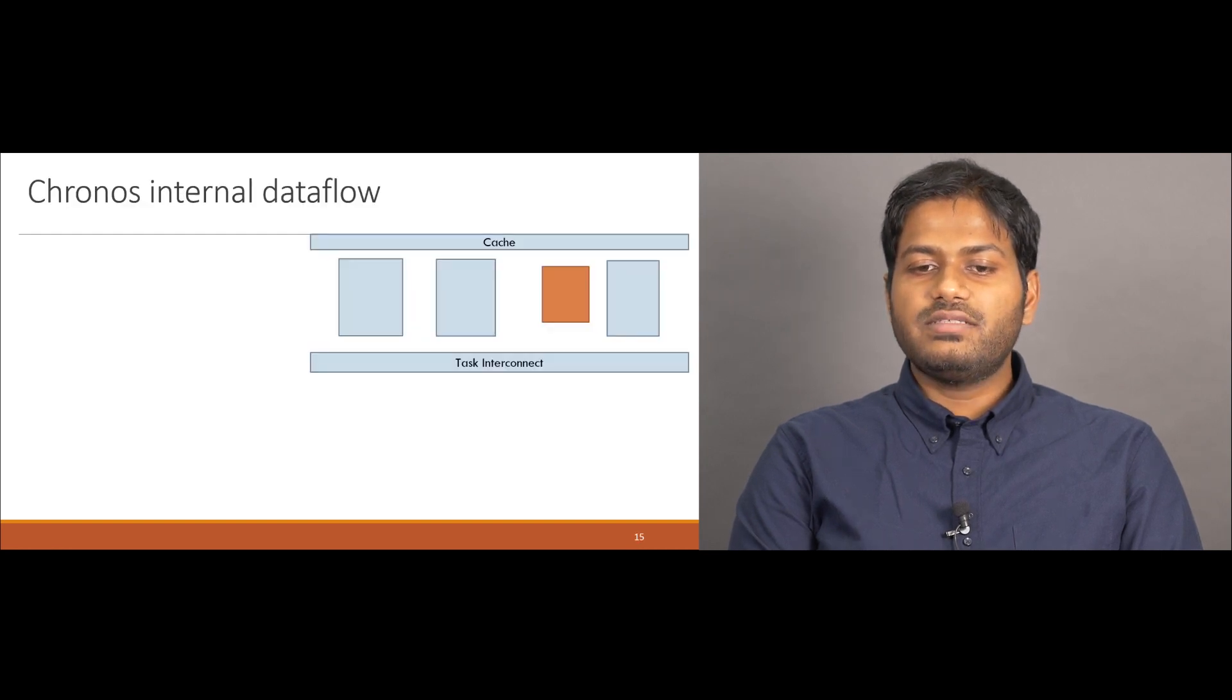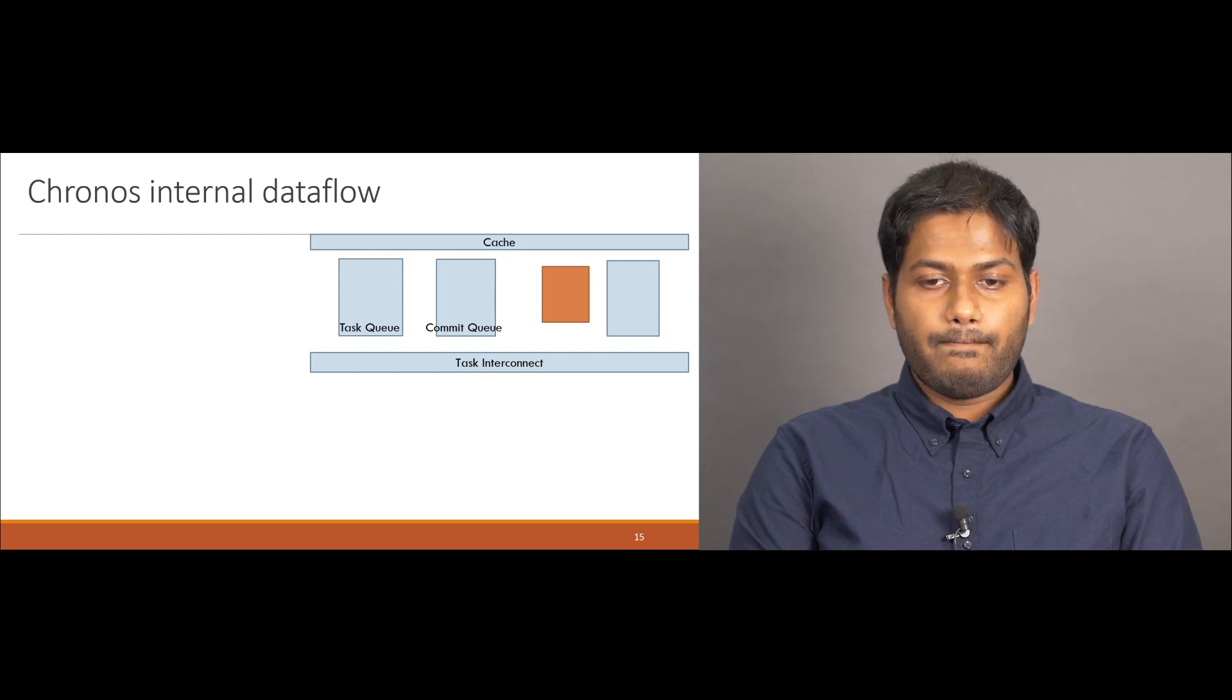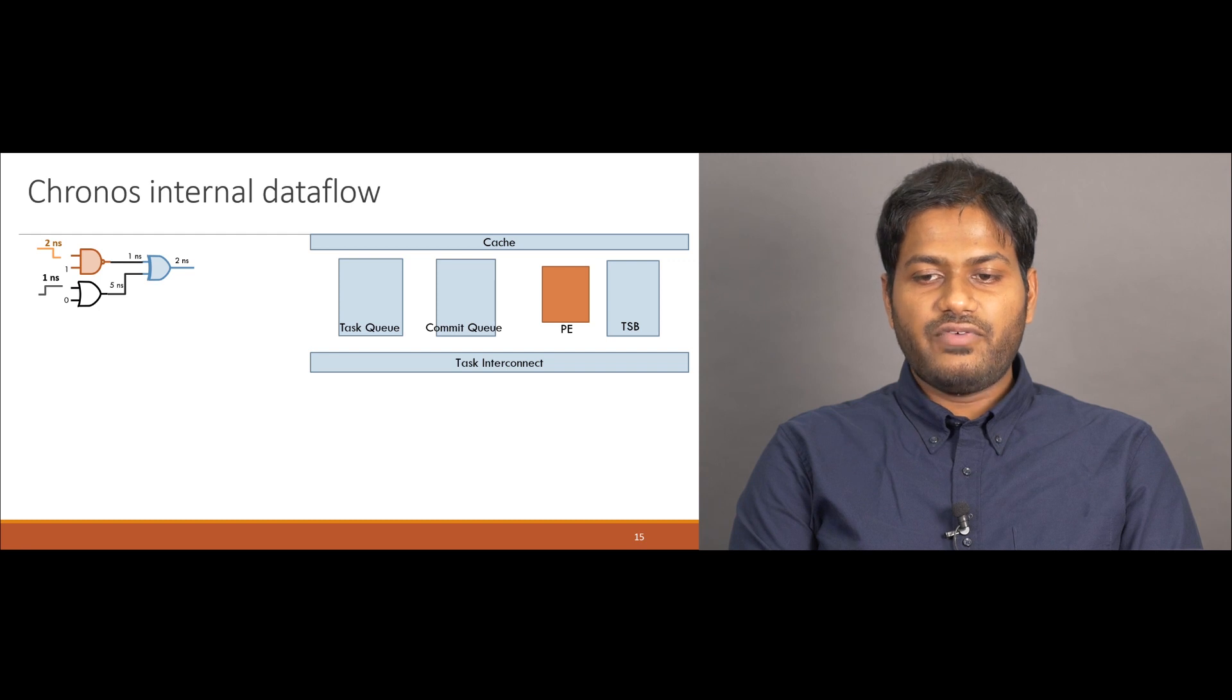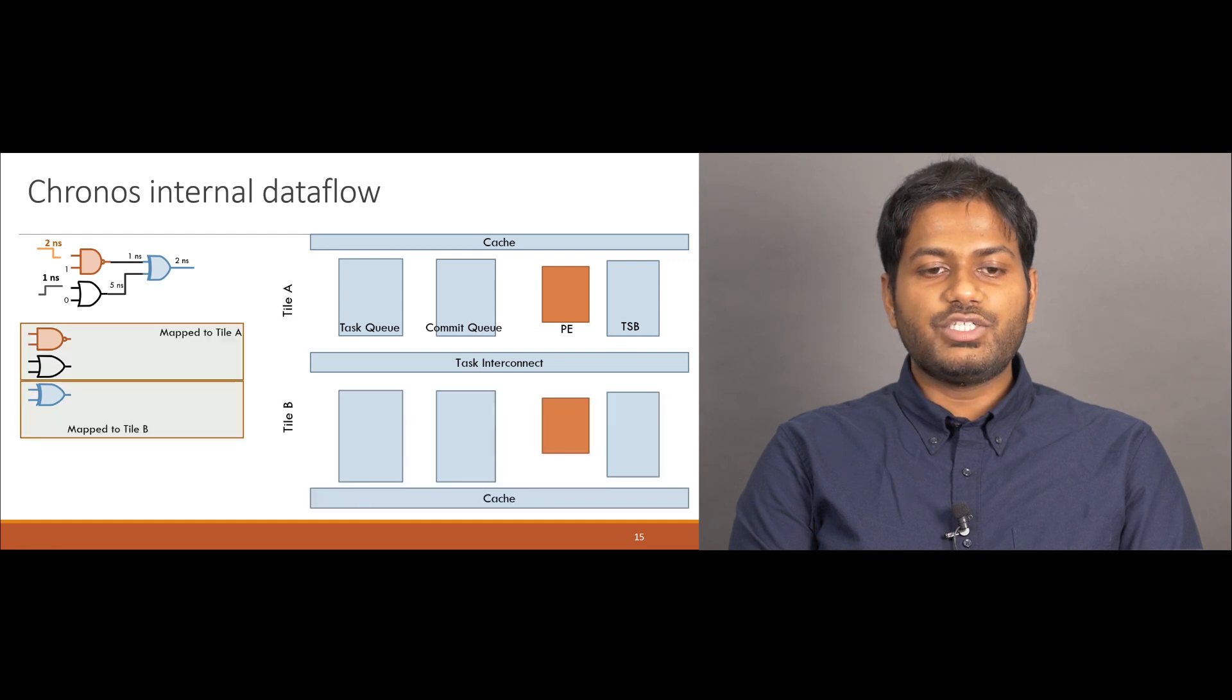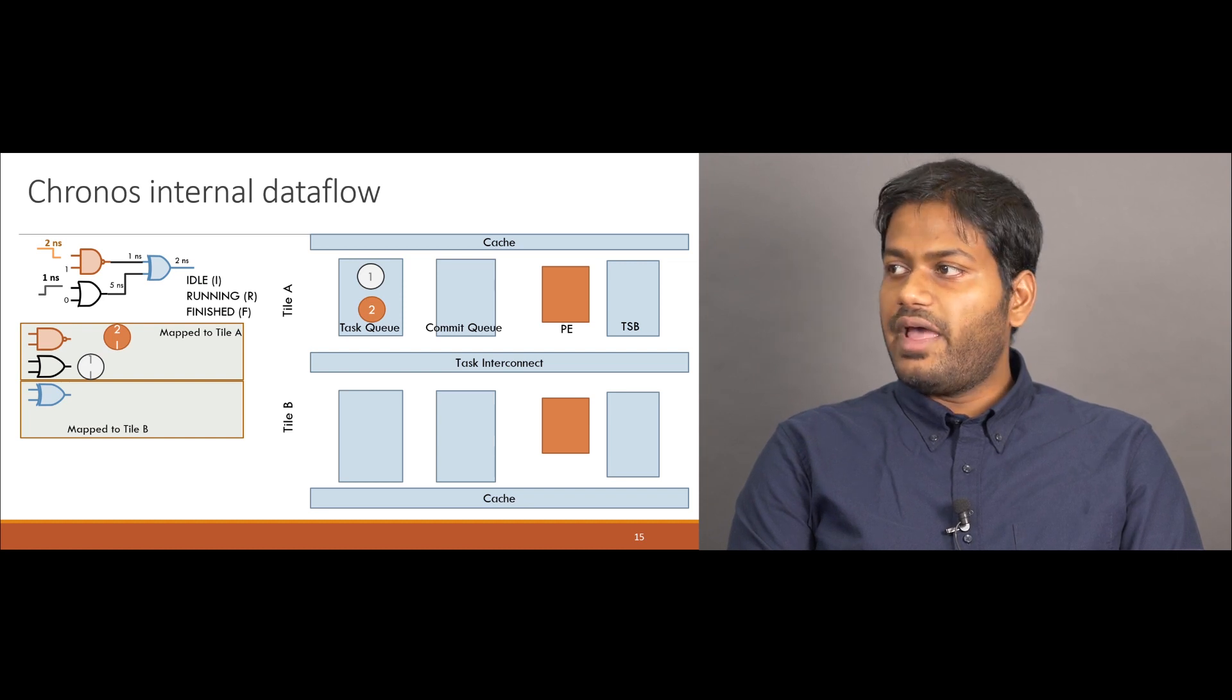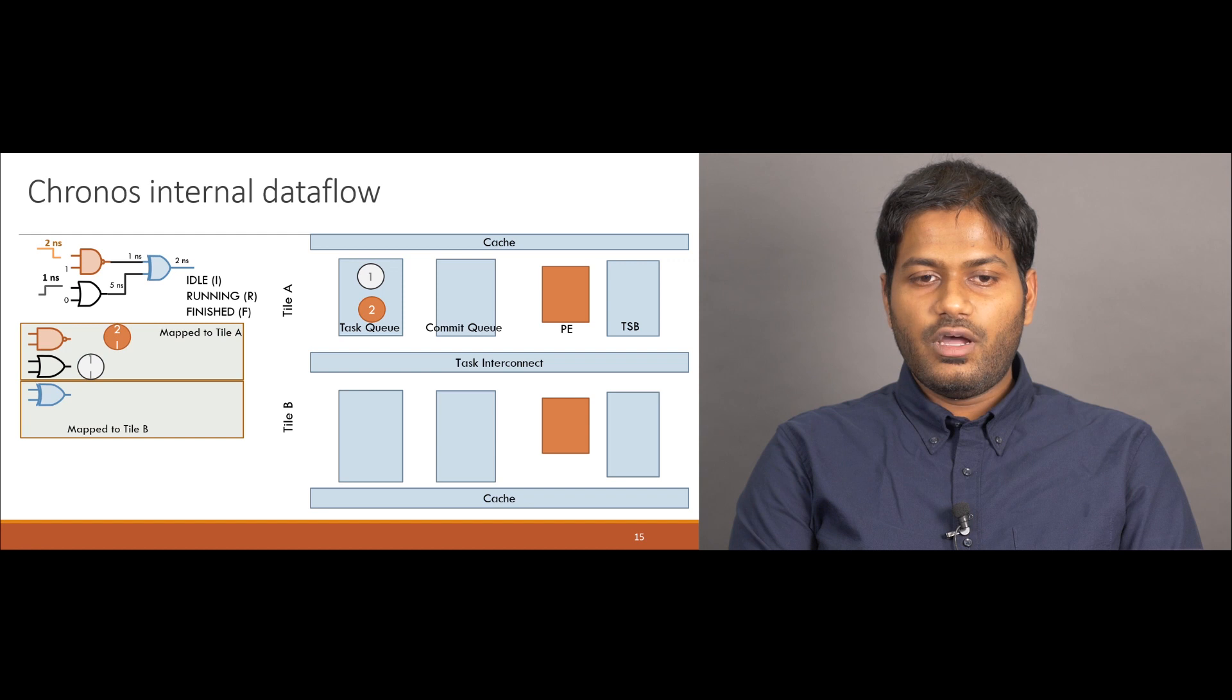Now, let's look at how a Kronos tile implements this life cycle. Each Kronos tile consists of a task queue, which stores the status of all tasks. And a commit queue stores the speculative state of all running and finished tasks, similar to a reorder buffer of an out-of-order core. A PE runs the task logic, and the task send buffer buffers newly created tasks until they are acknowledged by the destination tile. We illustrate the operation of these structures through a task graph example in the DES. We assume that this is run in a two-tile system, with the mapping shown on this diagram. In the beginning, we have two initial tasks, 1 and 2, which are both resident on the task queue of tile A.